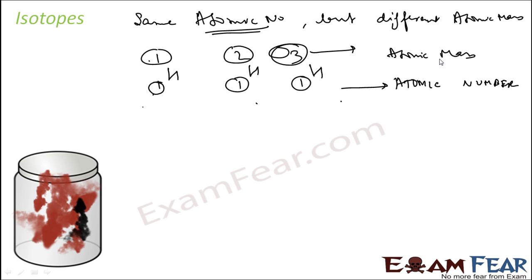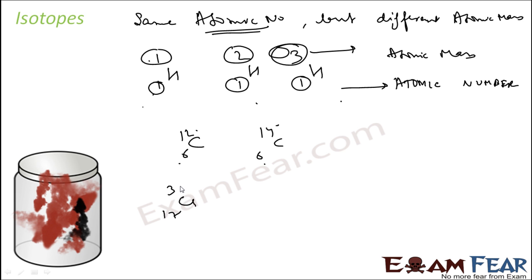Another example can be carbon — atomic number 6, atomic mass 12 or 14. Or chlorine — atomic number 17, atomic mass can be 35 or atomic mass can be 37.